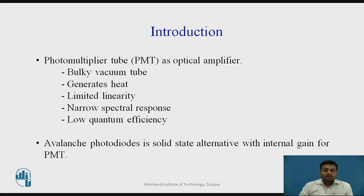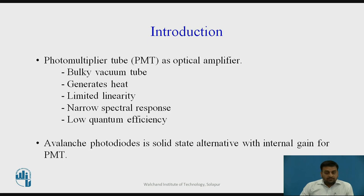In the previous lectures we have seen two photodiodes: the first one is the pn junction photodiode and the second one is the pin photodiode. Both of those photodiodes were without internal gain, meaning they generate a single electron-hole pair per incident photon. Today we are going to discuss the avalanche photodiode, which has internal gain — it generates more electron-hole pairs per incident photon.